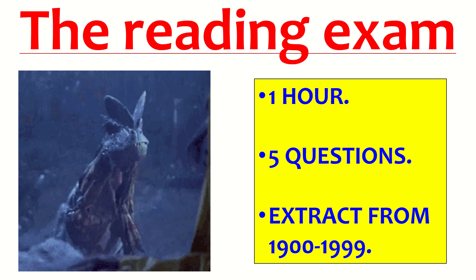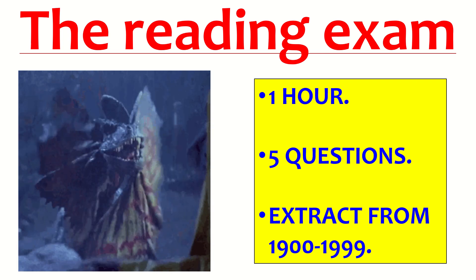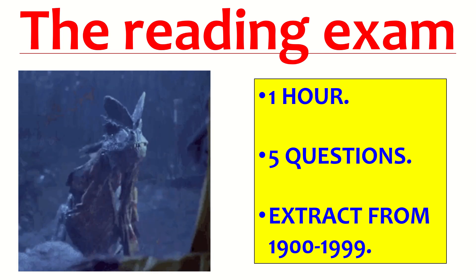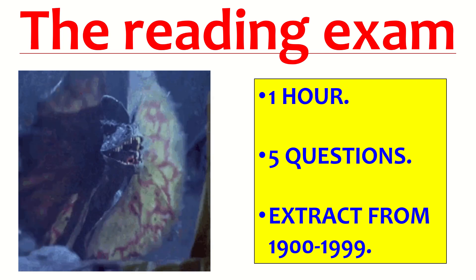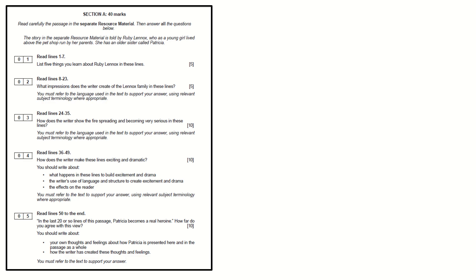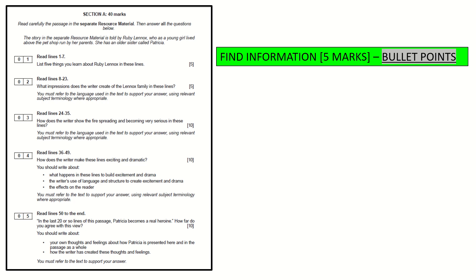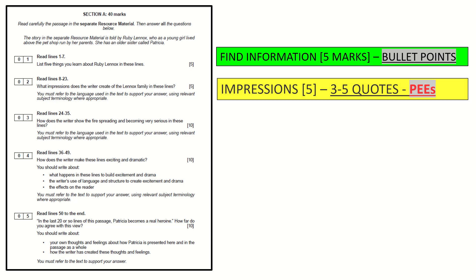The reading exam is one hour. You've got five questions and a page and a half extract taken from 1900 to 1999. Question one will always be the easy intro bullet point question. Then you've got an impressions question — if it's five marks, that's question two, three to five quotes.